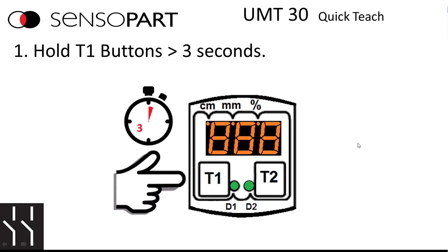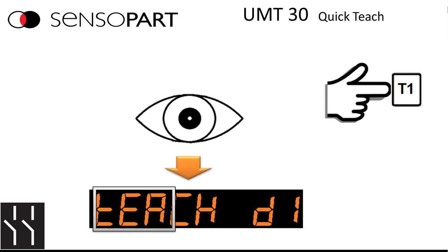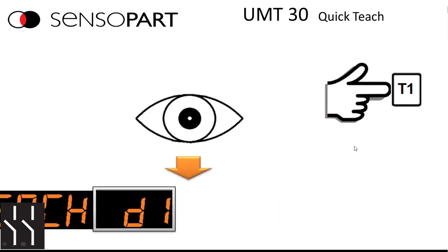First, you adjust the sensor to the distance you want to teach and you press and hold the T1 button to teach discrete one for more than three seconds. And what will happen is on the display, it'll say teach then D1 and you can let go of the button at that point.